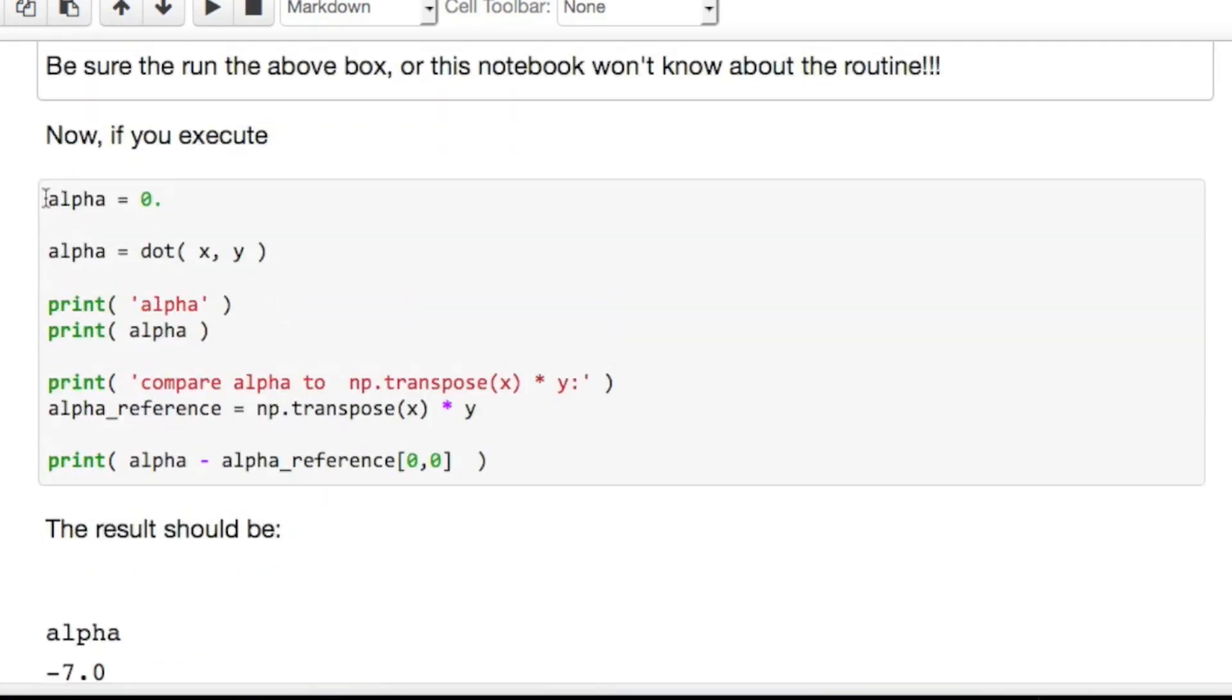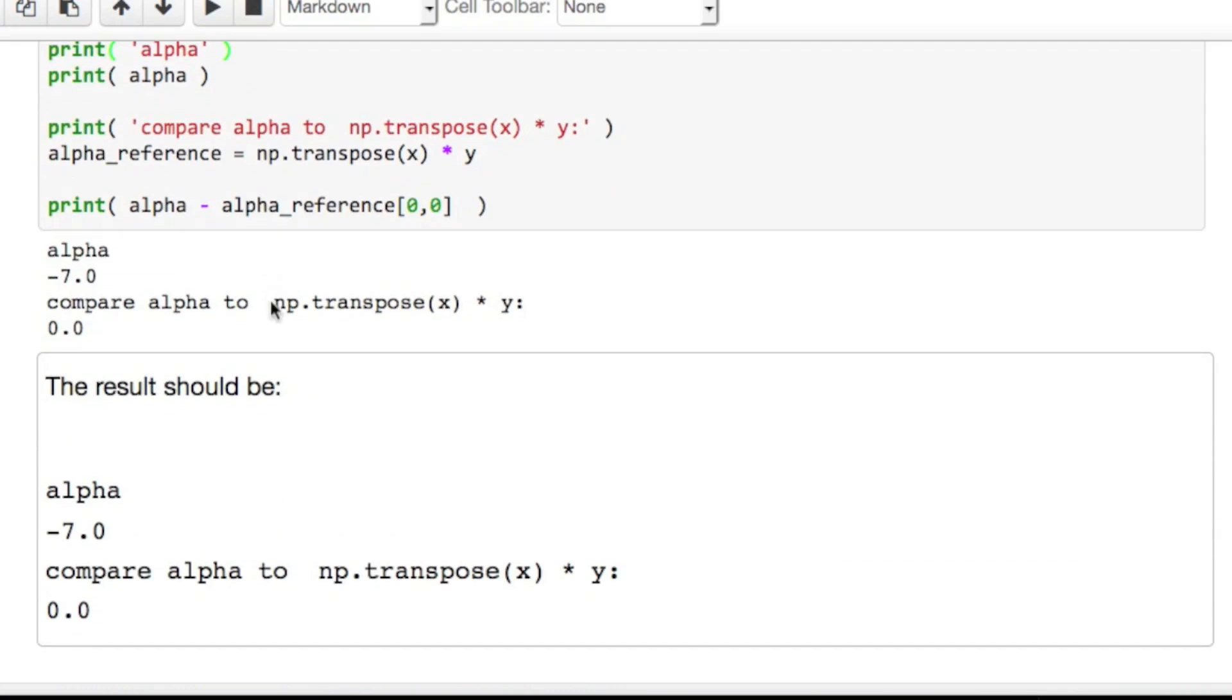And notice here that we can now call the routine dot with vectors x and y. And that routine then returns a value which you can then assign to the variable alpha. If we execute this particular cell, then we notice everything is good and we're all done.